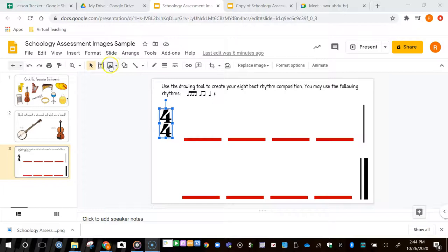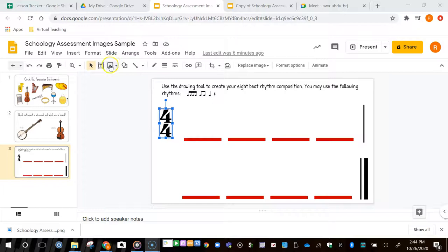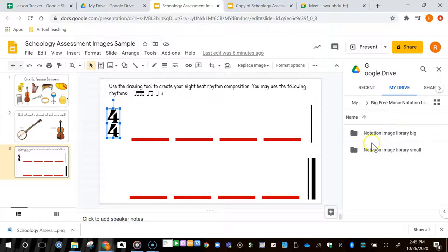All I need to do now is go to Insert Image and click on Drive. It has the entire library of images ready for me to use. I'm clicking on Notation Image Library Big, and for this example I needed a time signature.